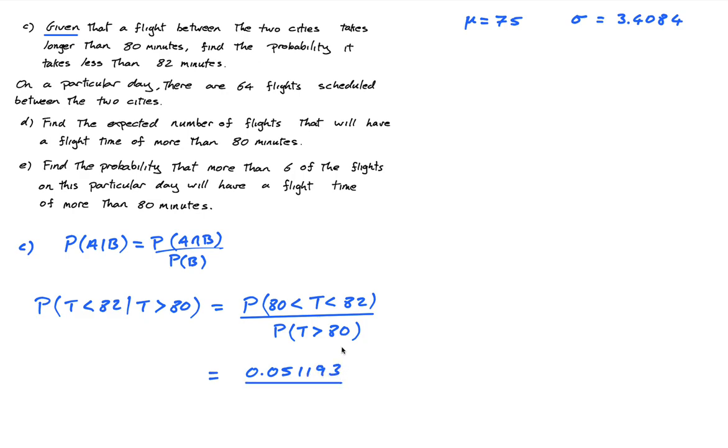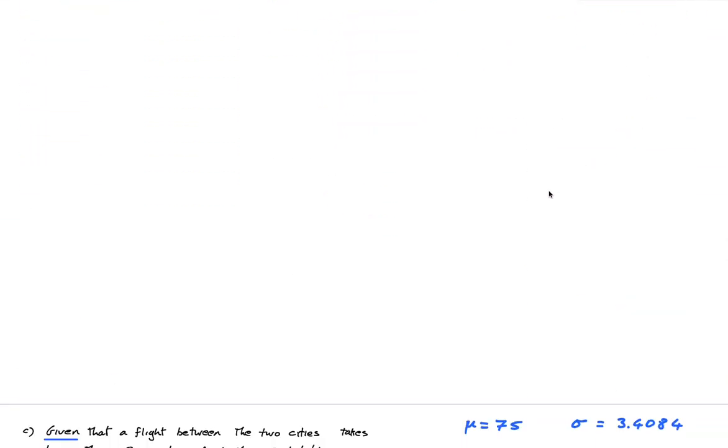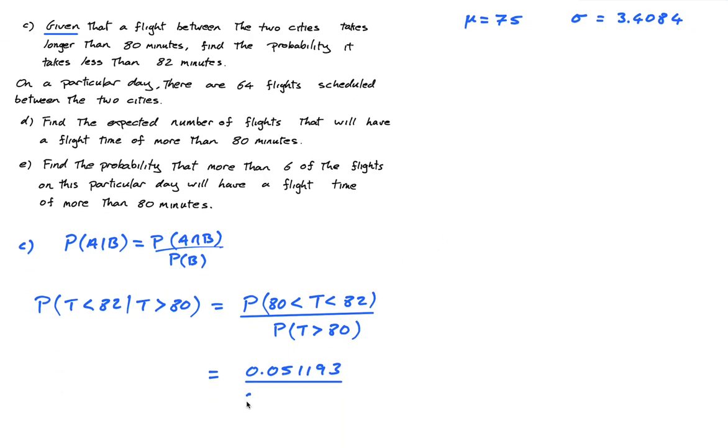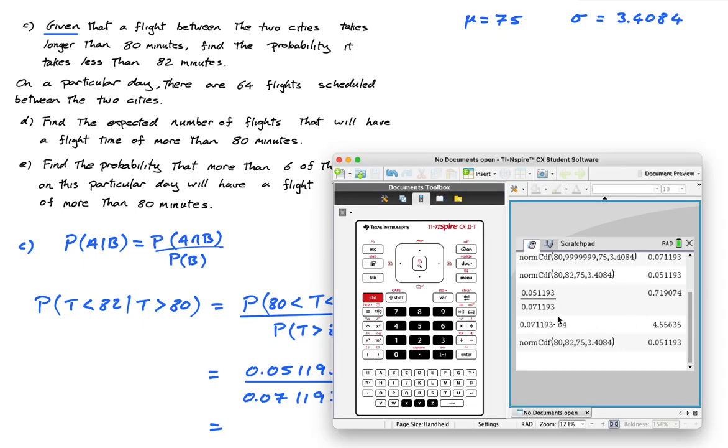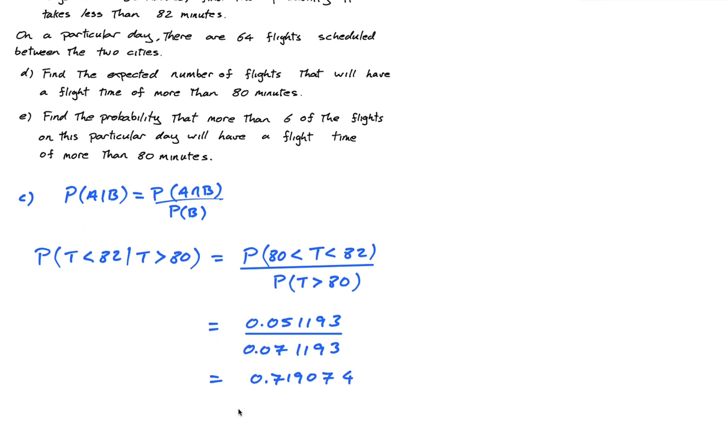And the denominator I have from the previous question is 0.071193, which is quite strange that they're both 1193, but that is just a strange coincidence. This divided by this equals 0.719074, or 0.719 to three significant figures.